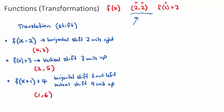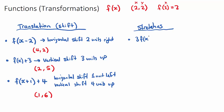The next topic is stretches. If I had something like 3f(x) — remember f(x) is the y value — we're multiplying every y value by 3. So this is a vertical stretch by a factor of 3. If I applied this to our original coordinate, the x wouldn't change and would still be 2, but the y coordinate gets multiplied by 3, so it becomes 6 because 2 times 3 is 6.